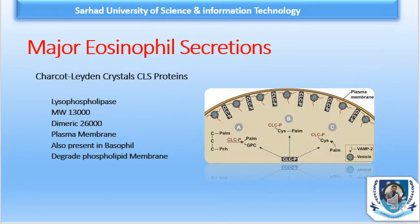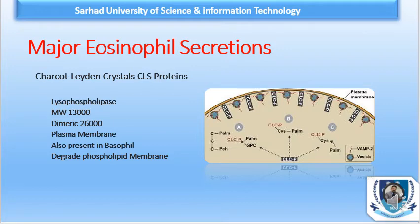The next secretion is Charcot-Leyden Crystals, simply known as CLC. It is also called lysophospholipase and has a molecular weight of 13,000 daltons. It is also found in dimeric form, and when it becomes dimeric, its molecular weight doubles to 26,000 daltons. CLC may be a crystallized fraction of MBP.